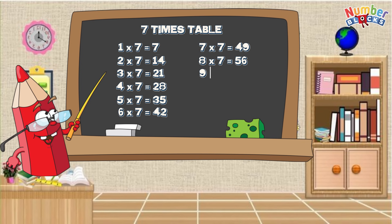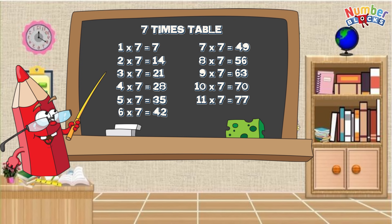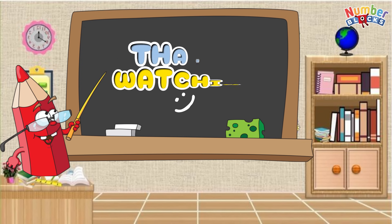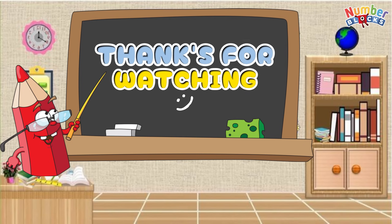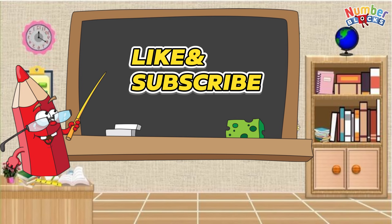8 times 7 is equals to 56. 9 times 7 is equals to 63. 10 times 7 is equals to 70. 11 times 7 is equals to 77. 12 times 7 is equals to 84.